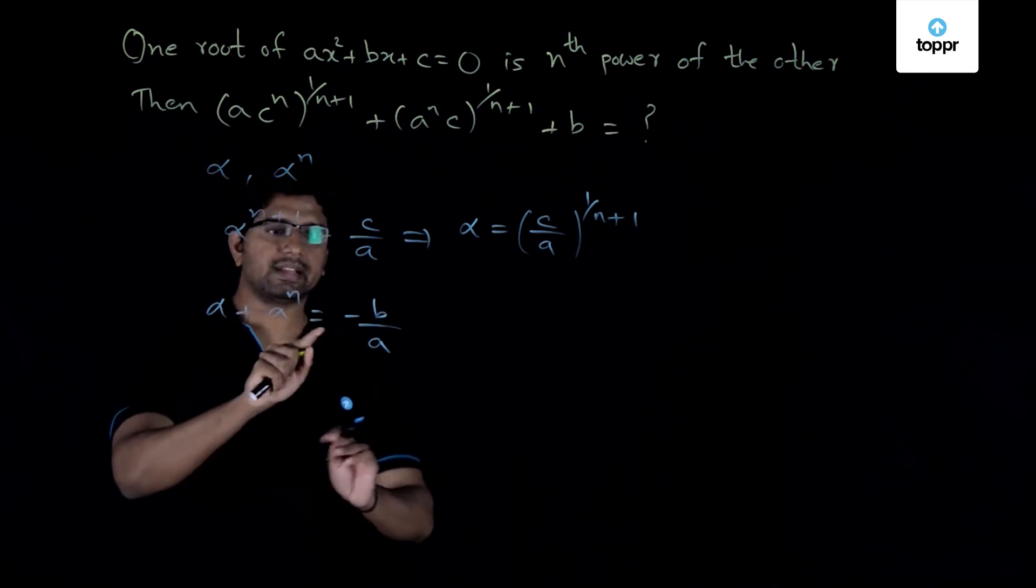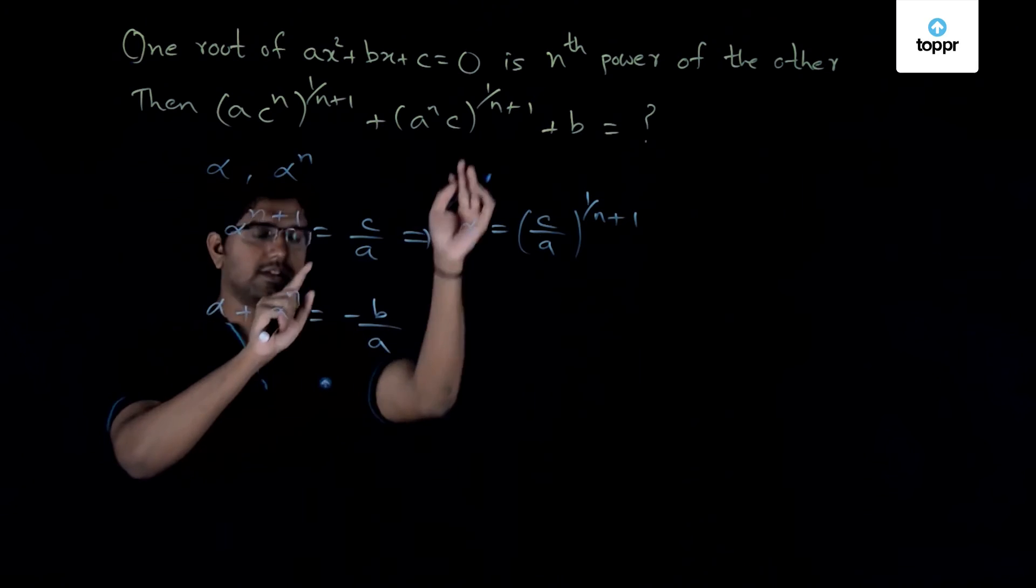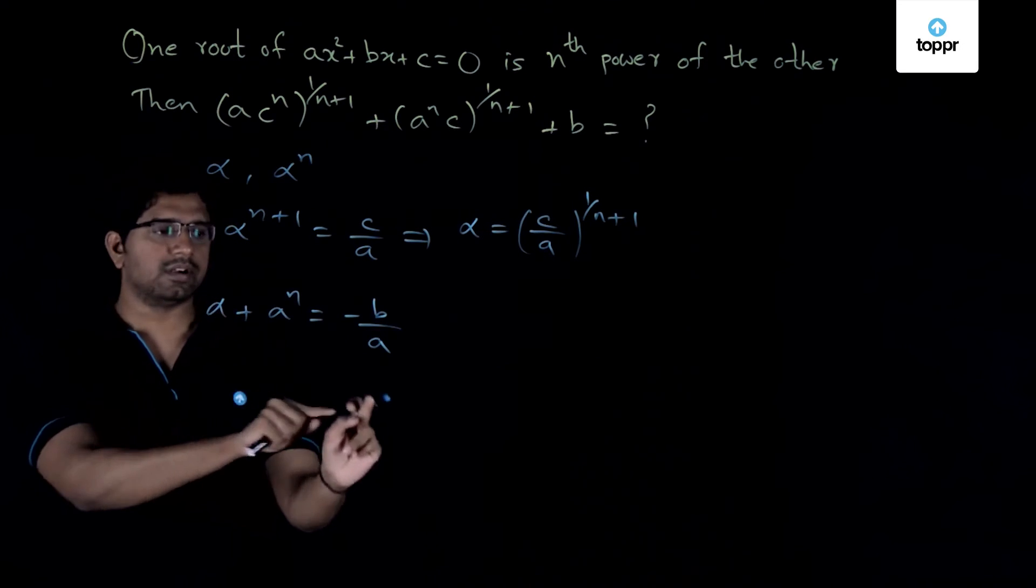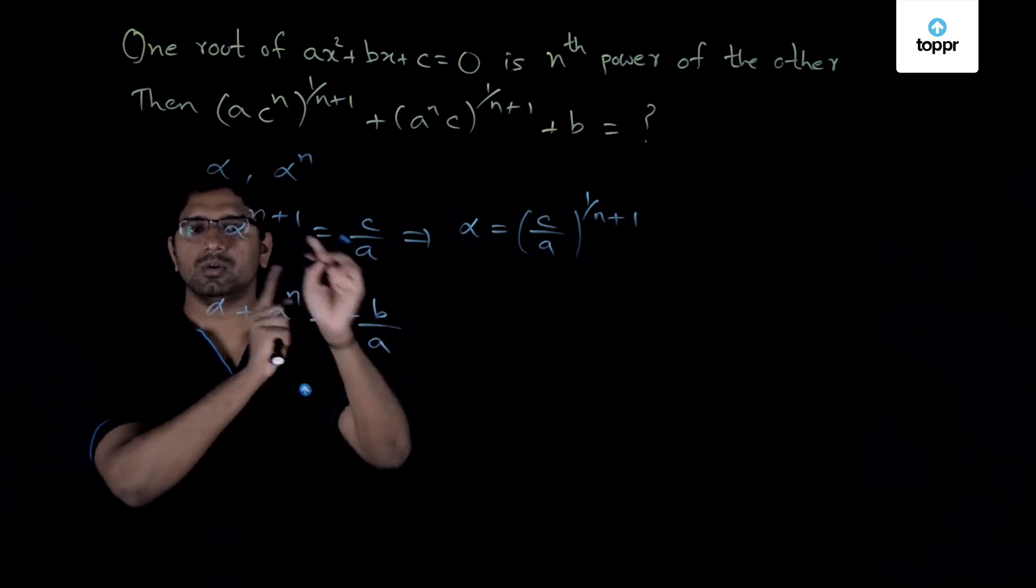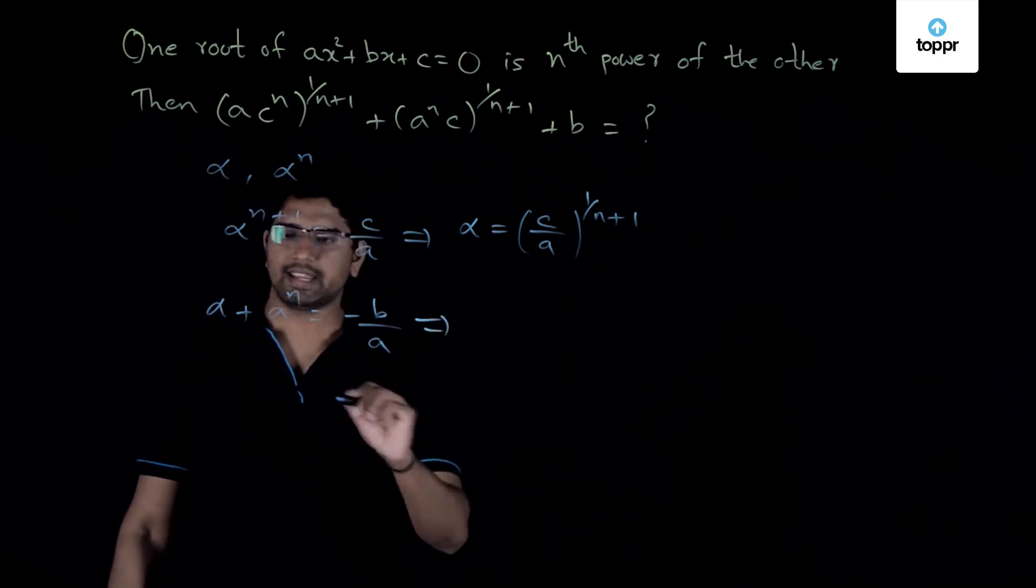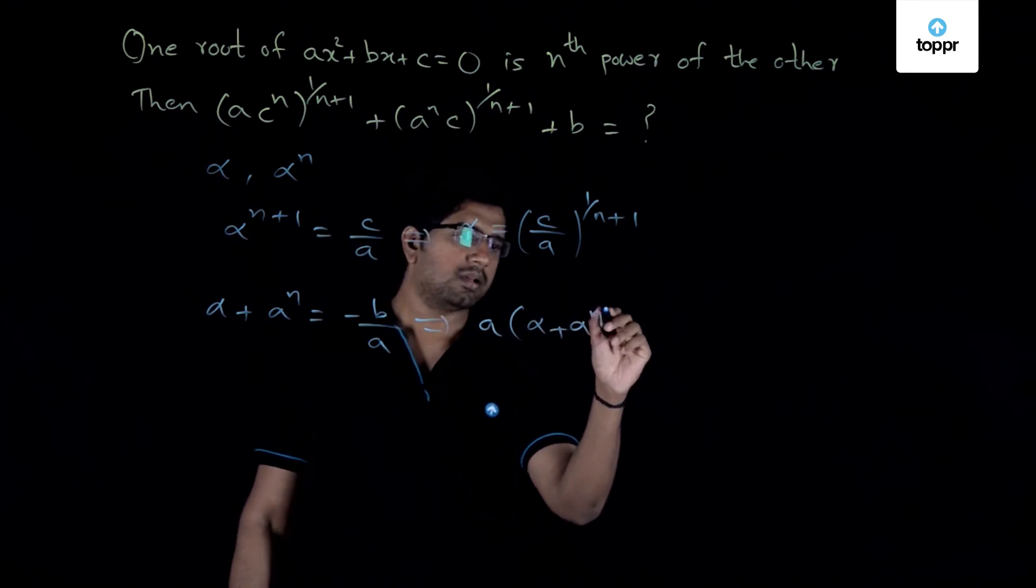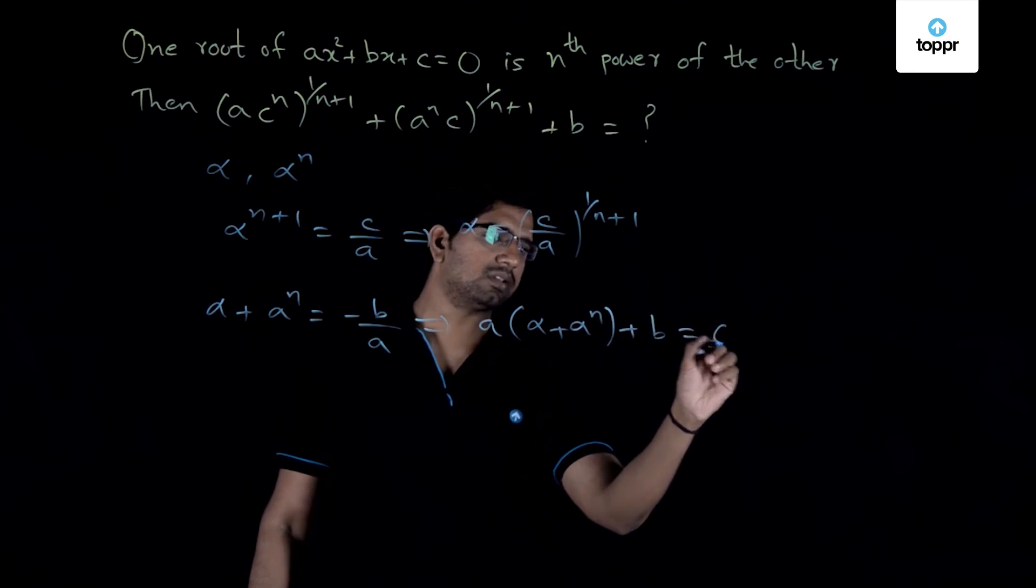But more importantly if you look at the expression to be evaluated it has got a plus b. And therefore let us again try to convert this expression into an expression which involves plus b. So this implies I can very well write this as a times alpha plus alpha power n plus b is equal to 0.